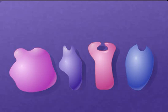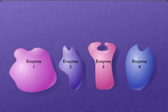Organisms contain many different kinds of enzymes that catalyze a variety of different reactions. Many of these reactions, such as those involved in the biosynthesis of an amino acid, are carried out in a specific sequence called a biochemical pathway.